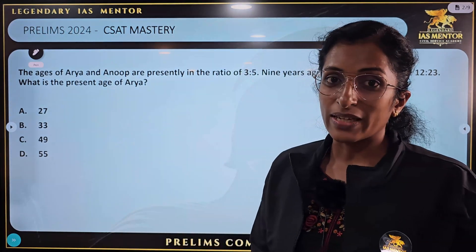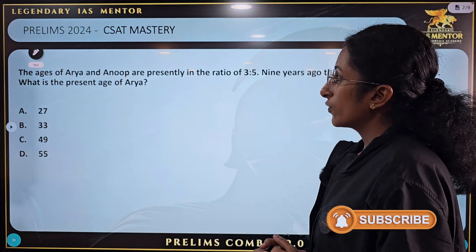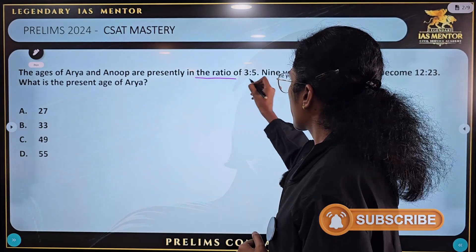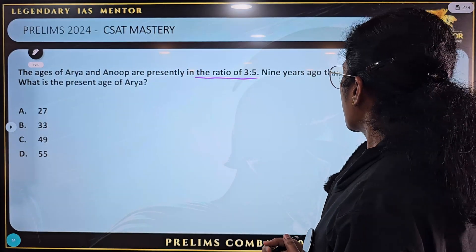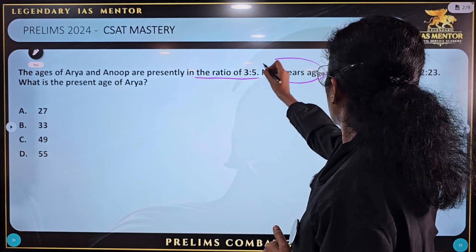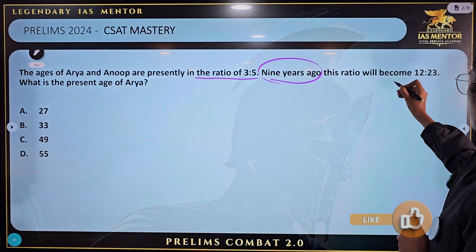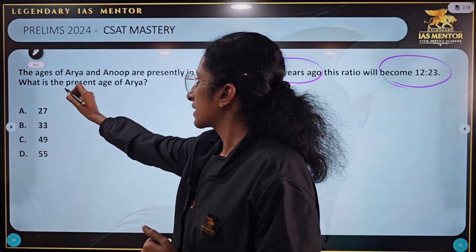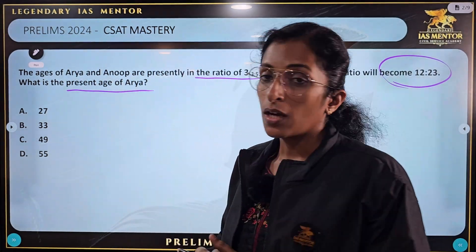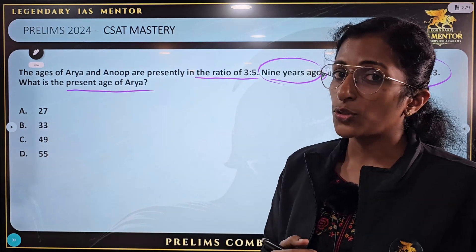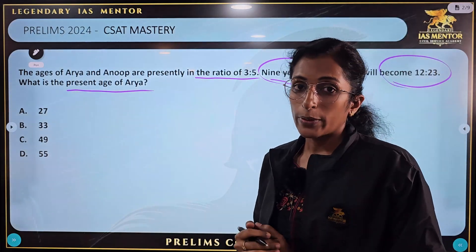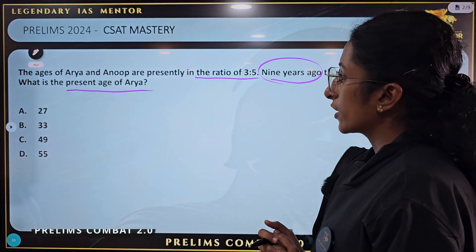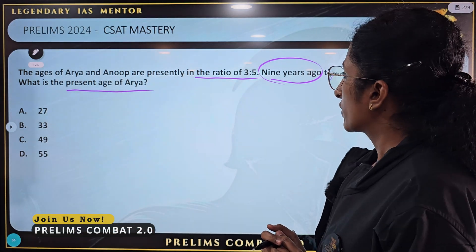Question 1. The ages of Arya and Tanoop are presently in the ratio of 3 is to 5. Nine years ago, this ratio would become 12 is to 23. What is the present age of Arya? The ages are presently in the ratio of 3 is to 5.